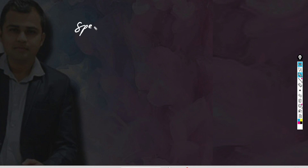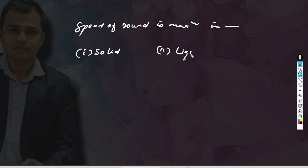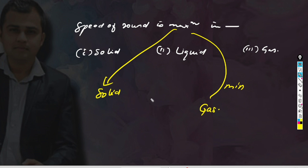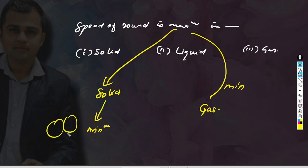Speed of sound is maximum in solid, minimum in gas, and moderate — meaning in between — in liquid. Speed of sound is maximum in solid because the gap between atoms or particles is minimum. In the case of gas, the space between particles is very high, so speed of sound is minimum there.